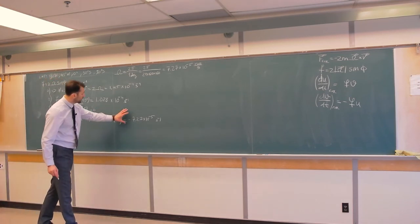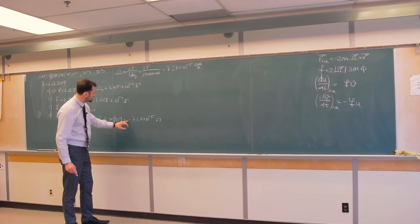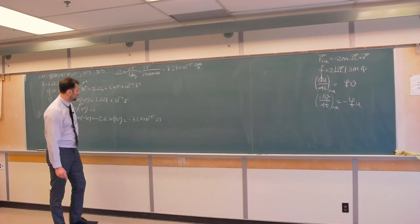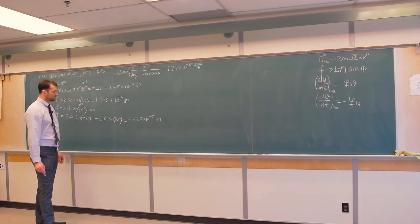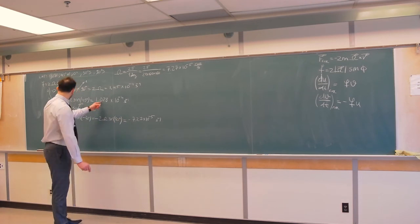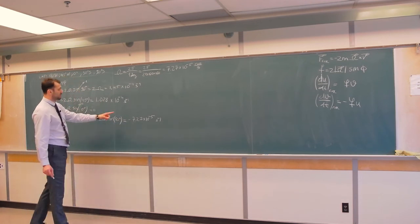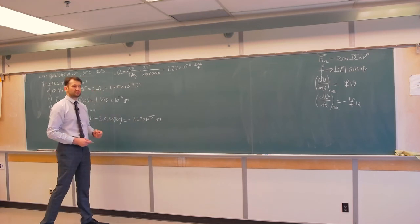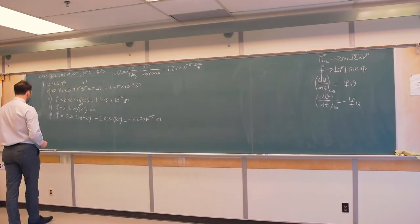So, Coriolis parameter is negative for the southern hemisphere. And again, we can see in the absolute value it's smaller than at 45 degrees because this is 10 to power negative 5. Again, Coriolis force weakens as we approach equator.